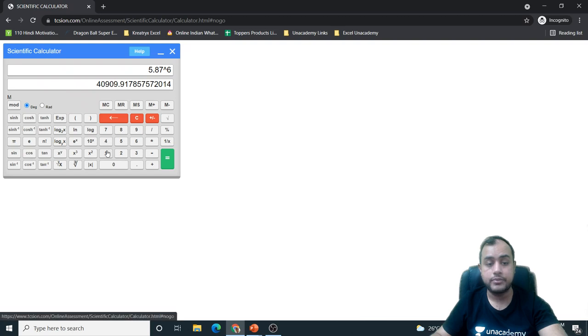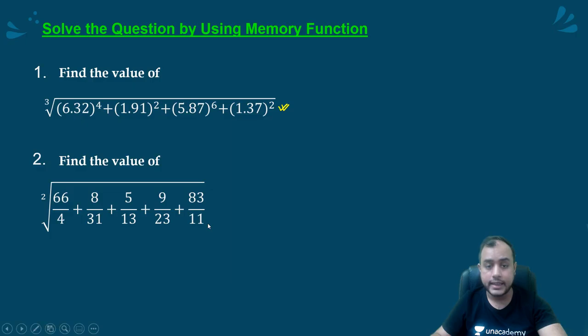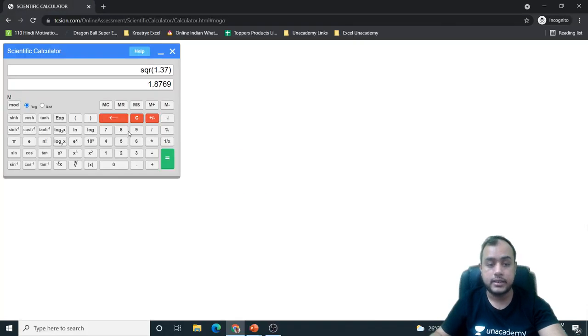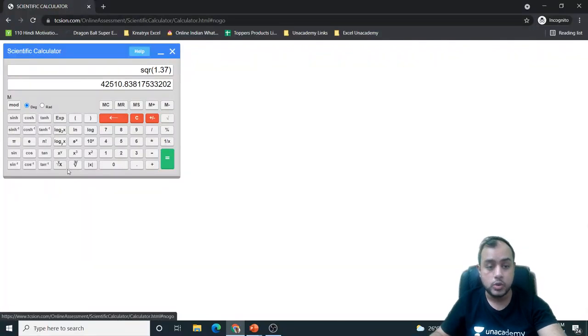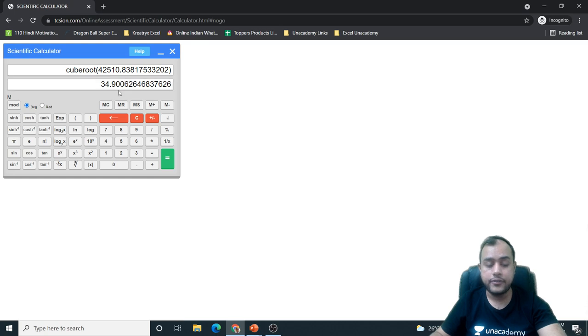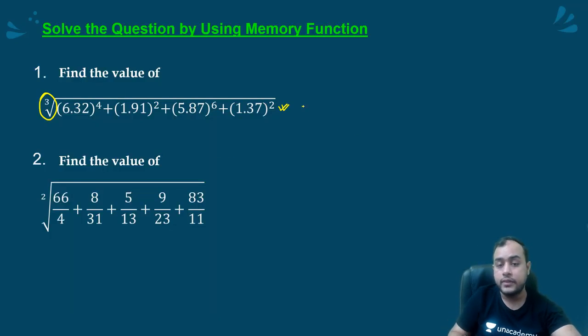1.37 square. I will press equal to, I will press M plus. Now, the entire number, the entire sum has been stored in the memory. I will have to recall it. I will press MR. This is the data stored in the memory. Now, you need to take a cube root. Let's take the cube root like this. 34.9. So this will give us the answer.